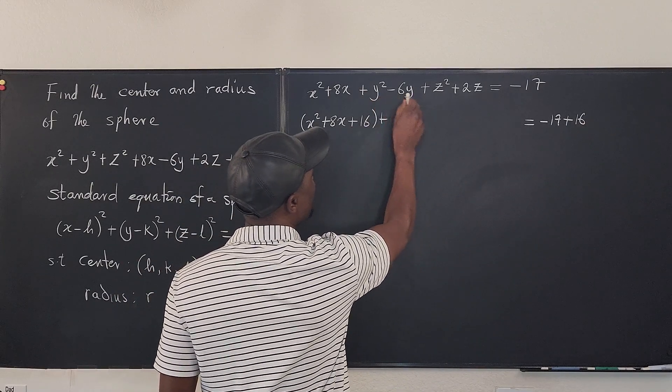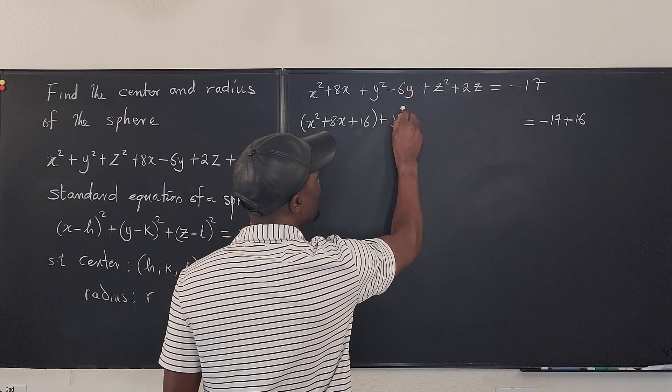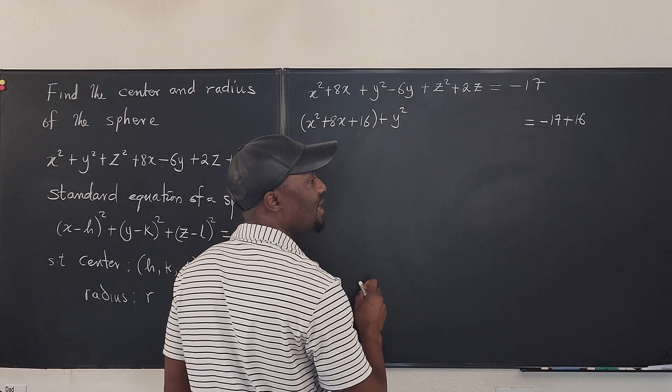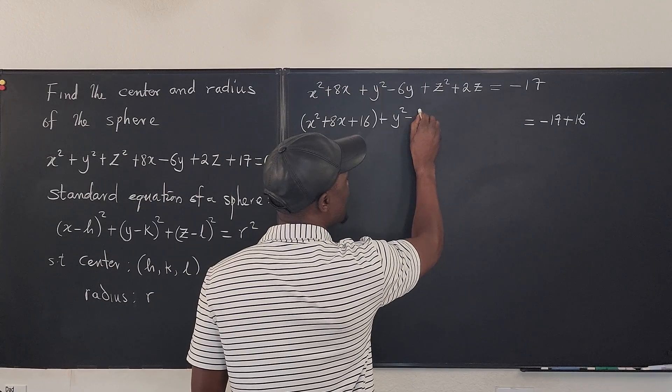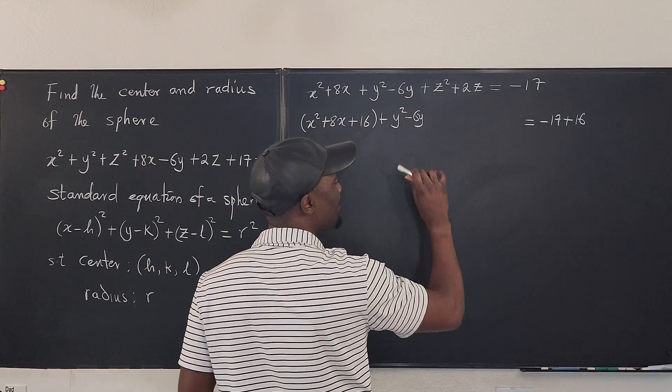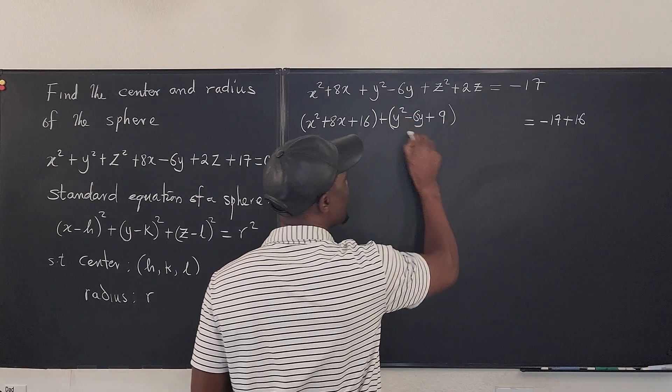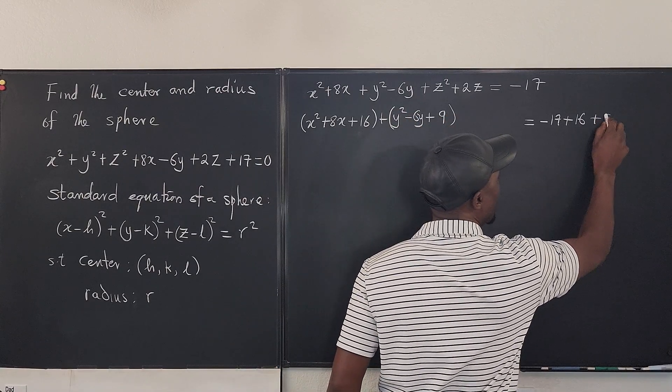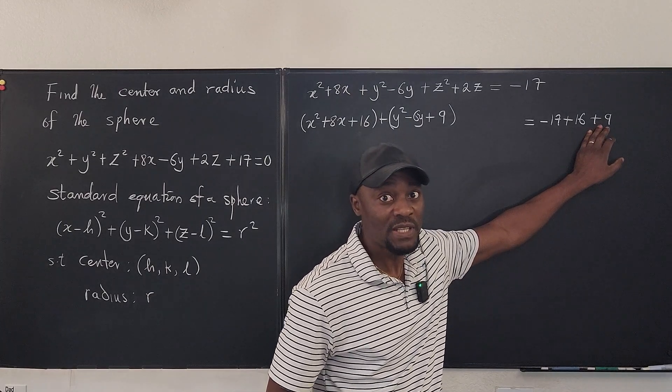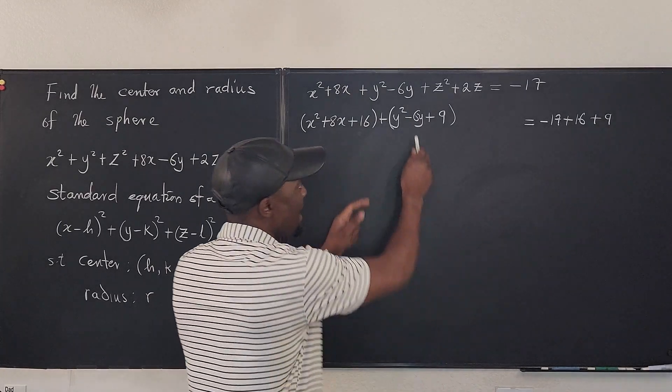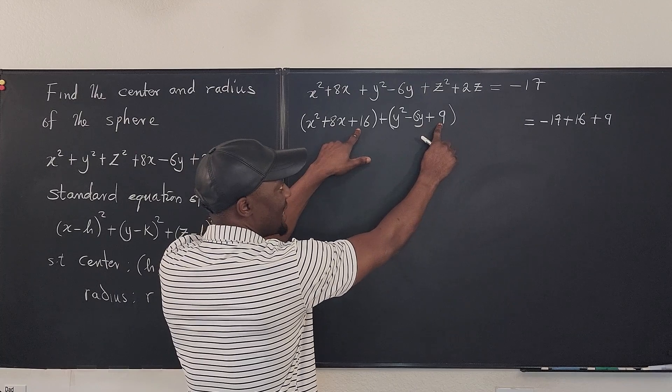So we go here. This is going to be plus. If we complete the squares for this, it's going to be y². Half of this is negative 3. So it's going to be y² - 6y. Half of it is negative 3. The square of that is plus 9. So we're adding 9 to this. We have to go here and add 9. Remember, every time you go here, it's always a plus you add. Even if the sign is minus, you can see I'm adding here.